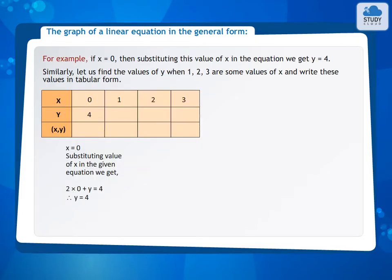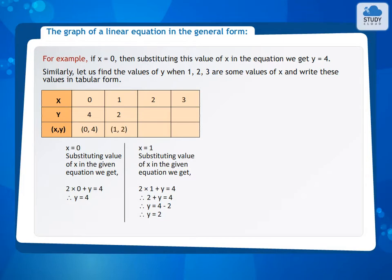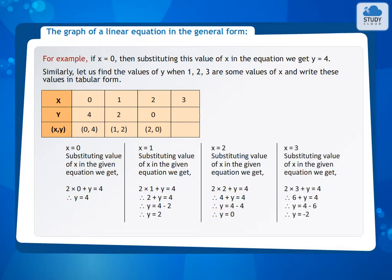For x equals 0, y equals 4, giving the ordered pair (0, 4). For x equals 1, y equals 2, giving (1, 2). For x equals 2, y equals 0, giving (2, 0). For x equals 3, y equals negative 2, giving (3, -2).